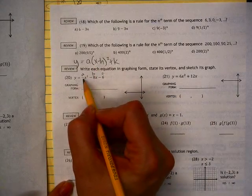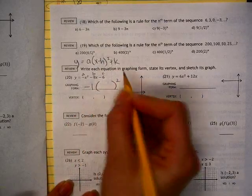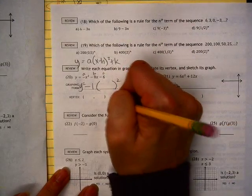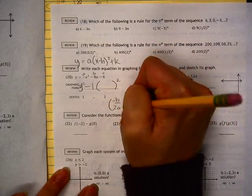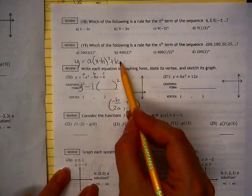So in this case here, A is negative 1. And I need to know what my h and k is. And the way we do that is negative b over 2a. And then we're going to plug it in to find our k value.